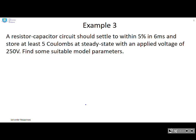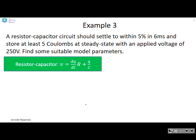Example 3. A resistor-capacitor circuit should settle to within 5% in 6 milliseconds and store at least 5 coulombs at steady state with an applied voltage of 250 volts. Find some suitable model parameters. First write down what I know, which is the model of a resistor capacitor circuit: v equals r dq/dt plus q over c.